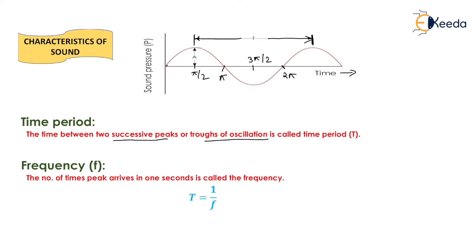What is frequency? The number of times a peak arrives in 1 second is called the frequency. It means that the number of waves passing in 1 second is known as frequency. So it can be calculated by T equals 1 by f, where T is the time period and f is the frequency.